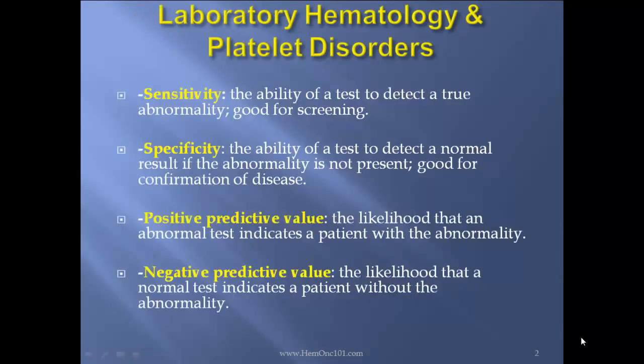Quick review. Sensitivity is the ability of a test to detect a true abnormality — good for screening. Specificity is the ability of a test to detect a normal result if the abnormality is not present — good for confirmation of disease. Positive predictive value is the likelihood that an abnormal test indicates a patient with the abnormality. Negative predictive value is the likelihood that a normal test indicates a patient without the abnormality.